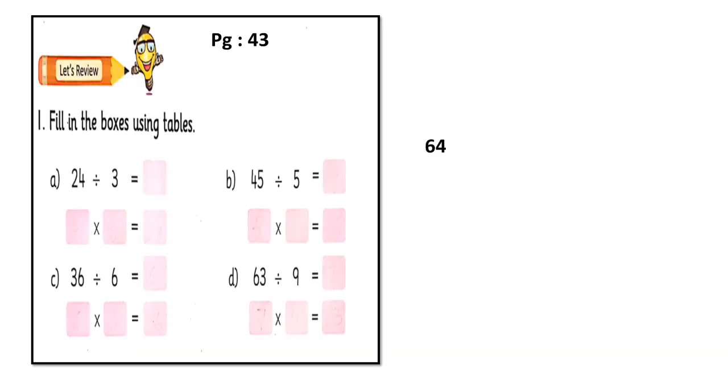Okay, now take out your books and open page 43. Question number 1, fill in the boxes using tables. The first one is, 24 divided by 3. How we will divide it? We divide it by multiplying number 3 to get the number 24. How many times you multiply 3 to get 24? Yes, 8 times. It means, 3 eights are 24. So, what is the answer? 8. We will write this sentence, this division sentence in multiplication sentence. How we will write it? 3 multiplied by 8 is equal to 24. When quotient will be multiplied by divisor, we get the dividend.